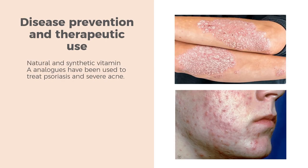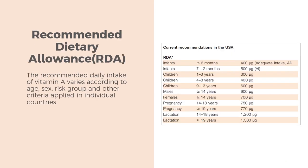Natural and synthetic vitamin A analogues have been used to treat psoriasis and severe acne. The recommended daily intake of vitamin A varies according to age, sex, risk group, and other criteria applied to individual countries. In the USA, the recommended daily allowance for adult men is 900 micrograms and for adult women it is 700 micrograms per day. During lactation, an additional 500 to 600 micrograms per day are recommended. Infants and children, due to their smaller body size, have a lower recommended daily allowance than adults.